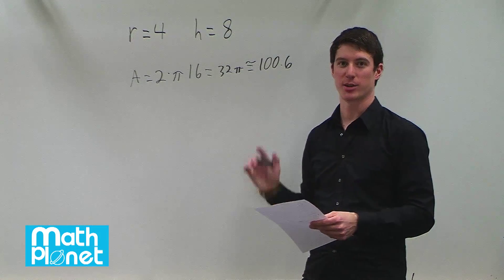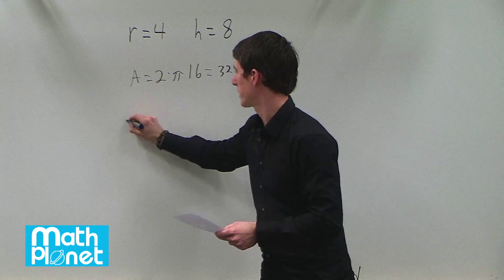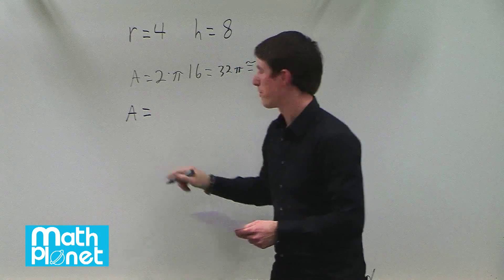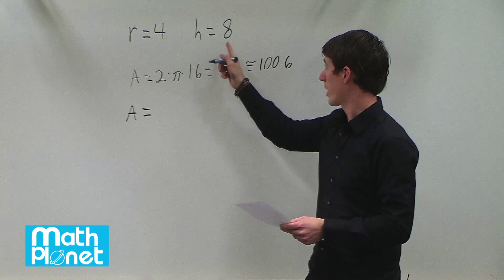The area for the rectangle that wraps around the cylinder is going to be the base times the height. So the height is given as eight.